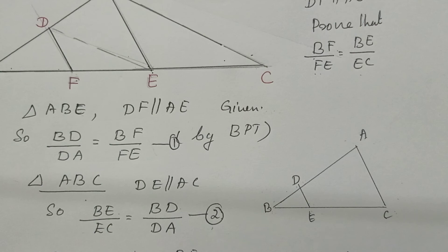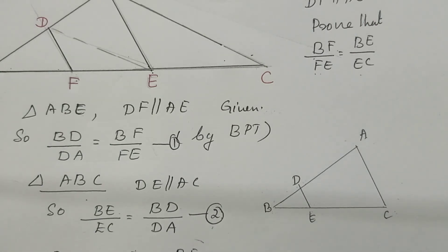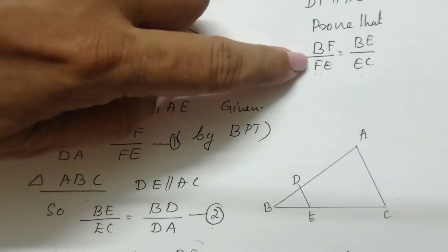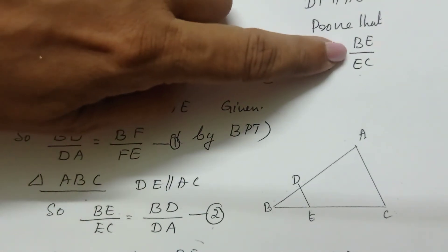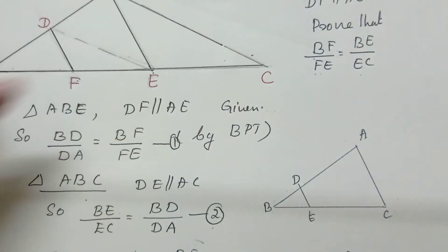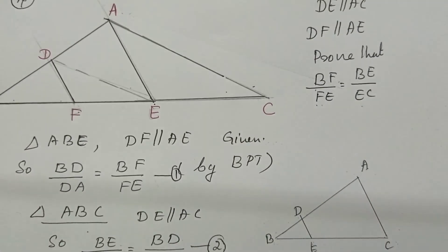Here also, we need these two things. Therefore, BF divided by FE is equal to BE divided by EC. Hence, we can prove this theorem.